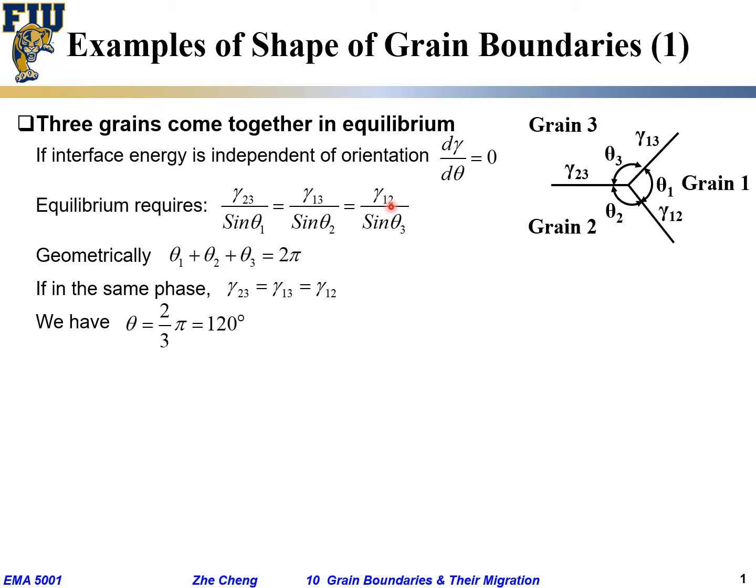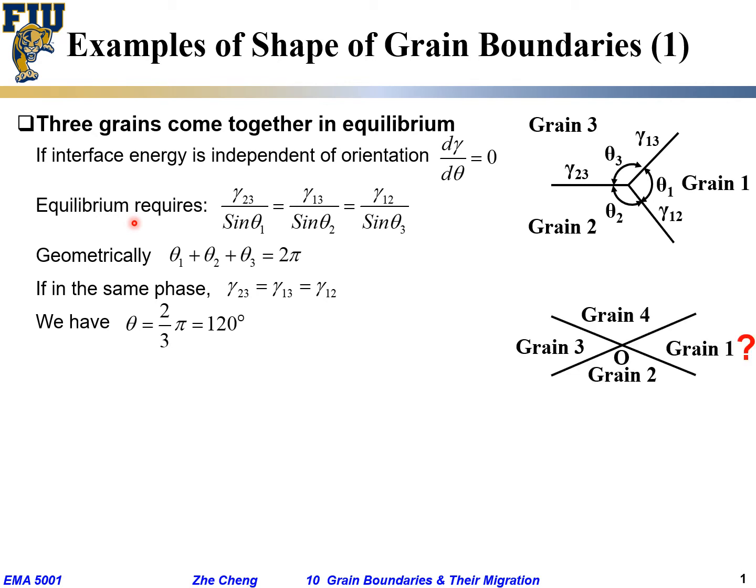This explains why in reality, when you look at a polycrystalline material and observe three grains coming together, in most cases the three angles are roughly 120 degrees under equilibrium or close-to-equilibrium conditions. At the very beginning it may not be exactly 120°, but over time they would settle at 120 degrees.